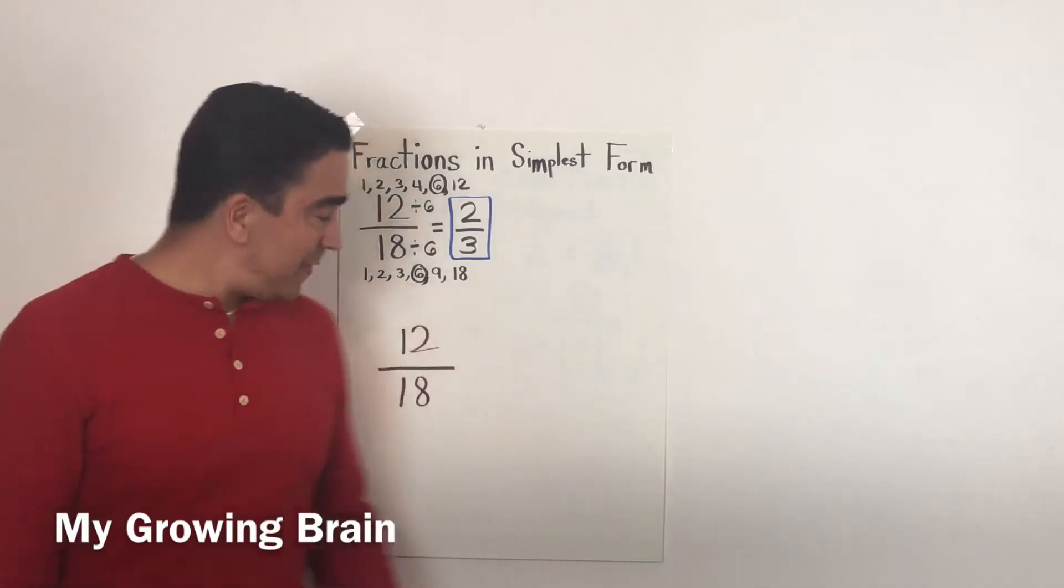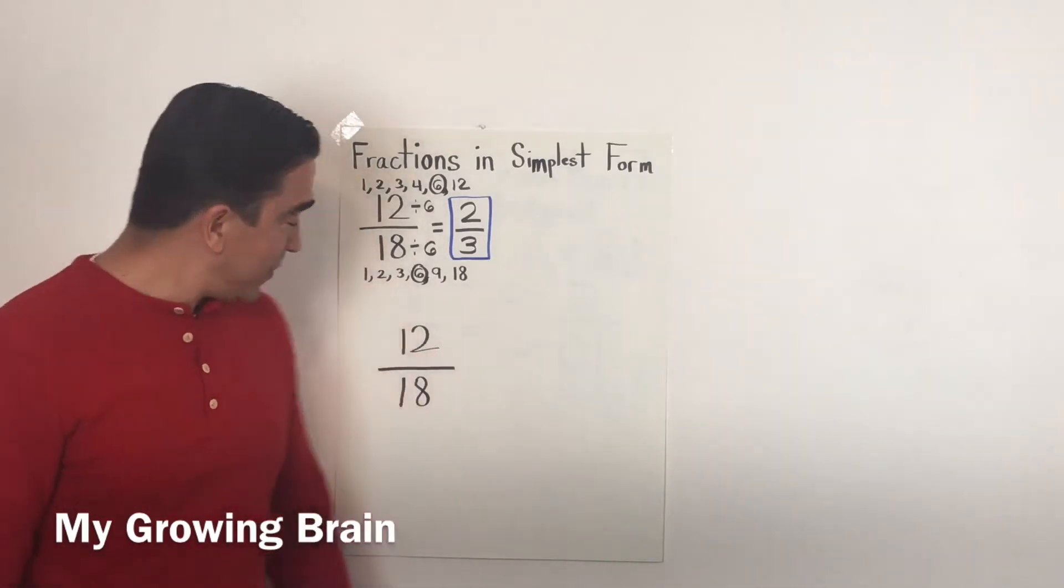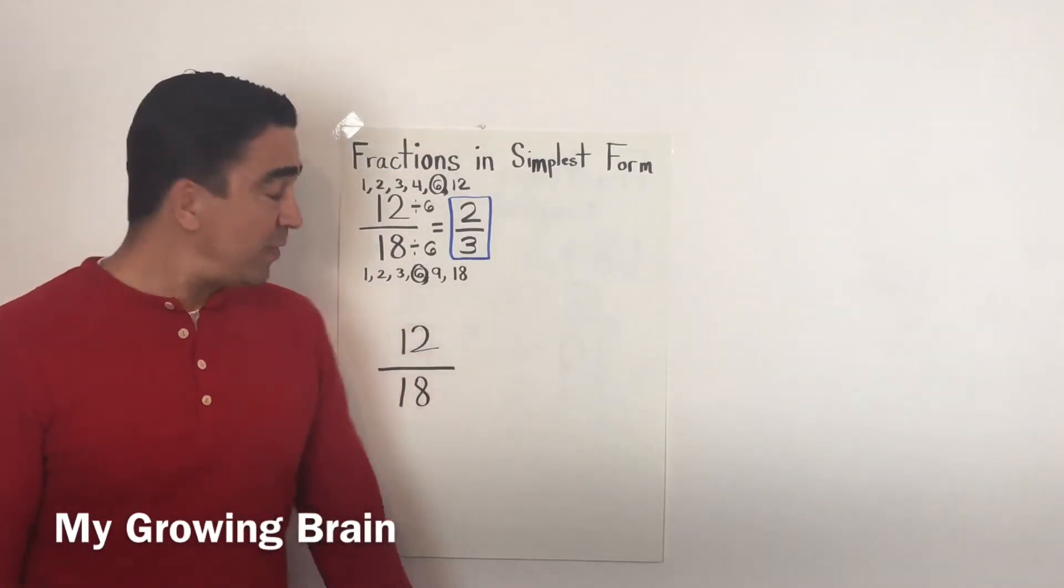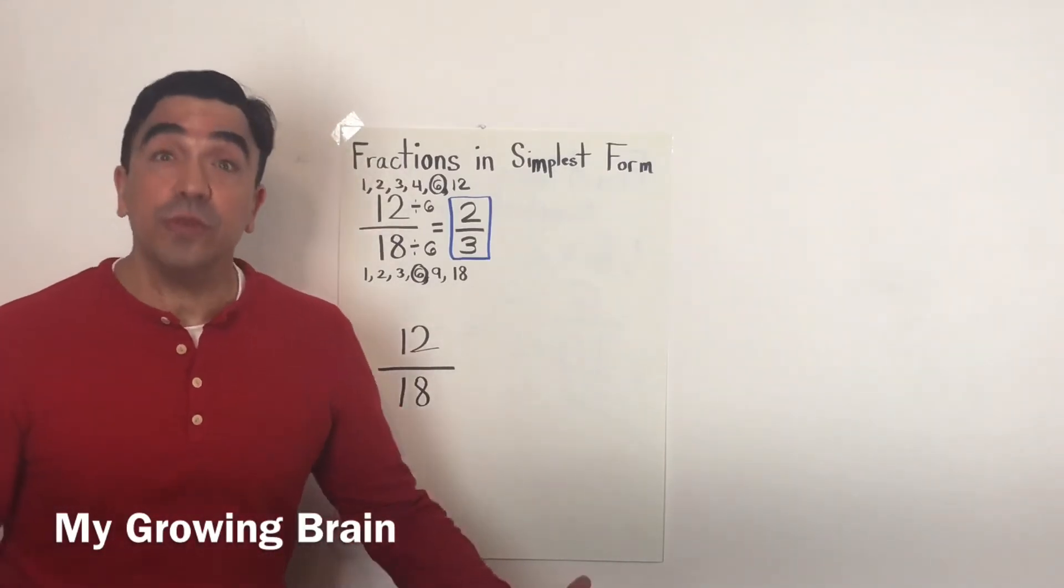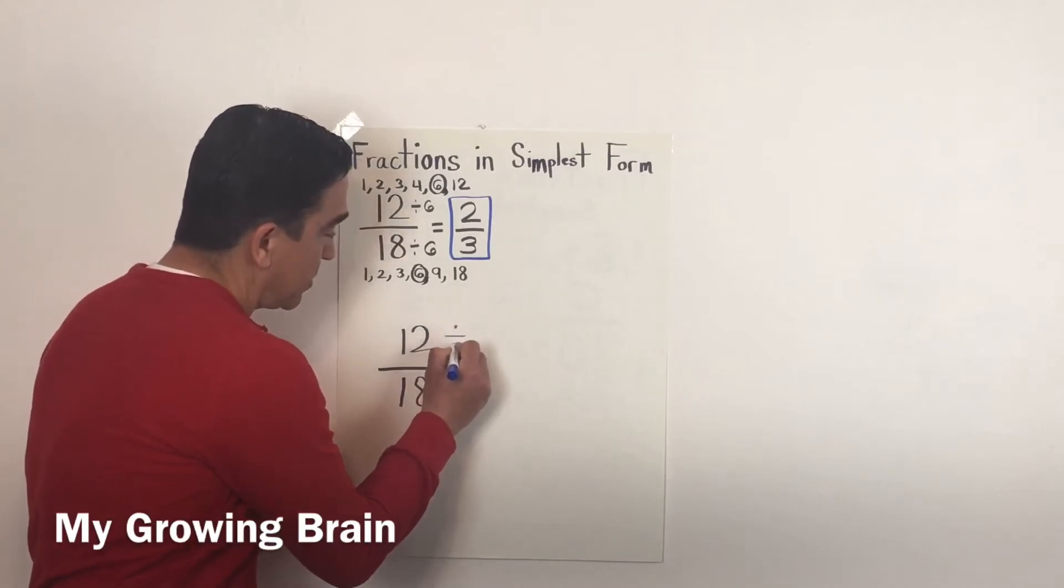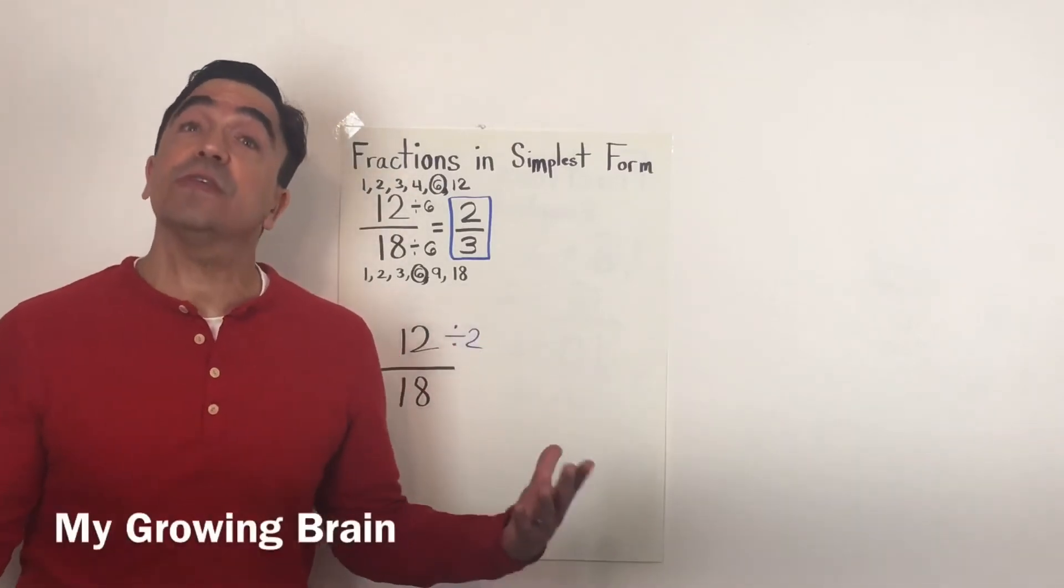So the first thing I notice is that 12/18, well, they're both even numbers. So I'm just going to start by dividing it by 2. I'll start with the numerator, and I'll also do it to the denominator.